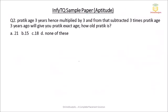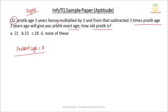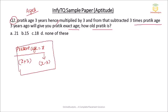Now question number 2 is from the topic of problems on ages. Prateek's age three years hence multiplied by three, and from that subtract three times Prateek's age three years ago, will give you Prateek's exact age. The problem is very simple. Suppose your present age is X — your age after three years will be X plus 3, and your age three years before will be X minus 3. This is the basic concept of ages.